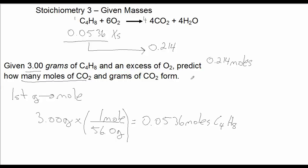To answer the question of how many grams of CO2 will be produced, simply follow that same procedure as last time. Convert 0.214 moles of CO2 to grams of CO2 using the molar mass of CO2, which was 44. So if you multiply 44 times 0.214, I end up with 9.43 grams of CO2.